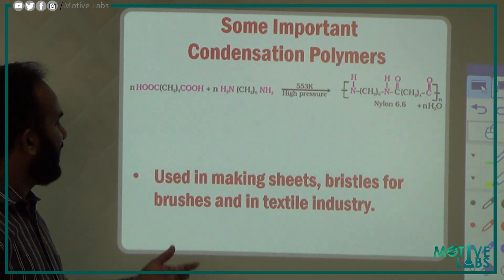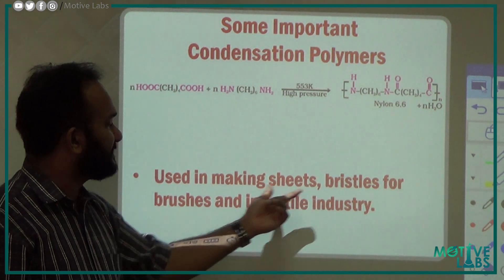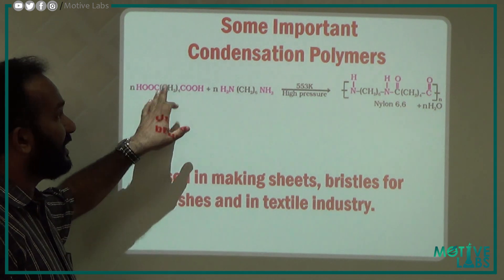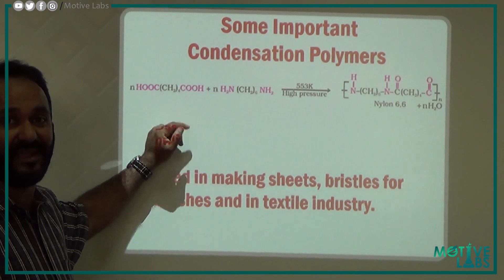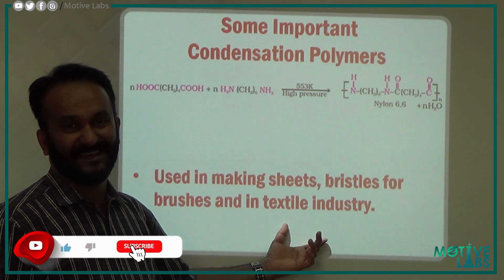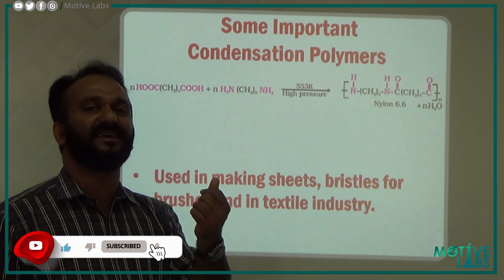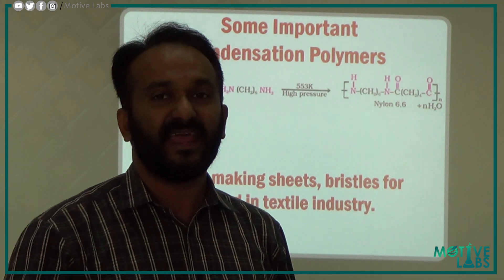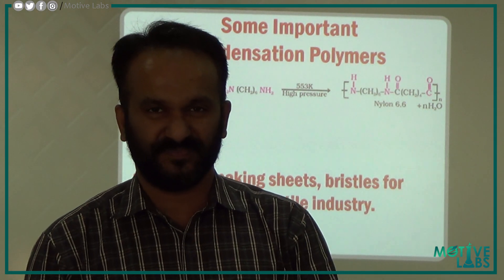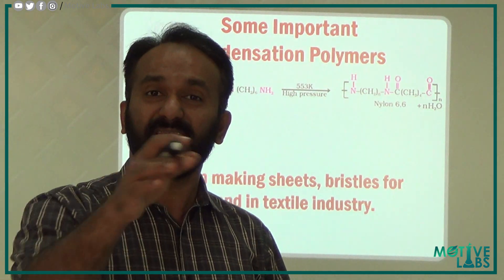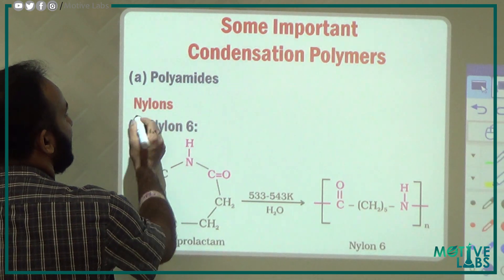Nylon 66 has a crystalline nature. It is used for making sheets, bristles for brushes, and in textiles. Due to its crystalline nature and tensile strength, we use Nylon 66 extensively.